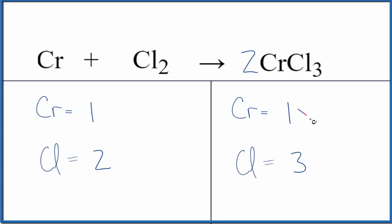So one times two, that'll give us two chromiums. Three times two though, that'll give us six chlorines.